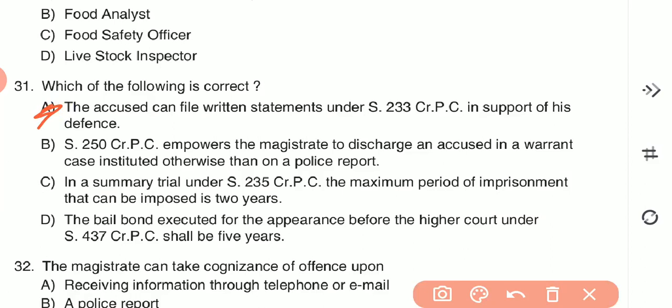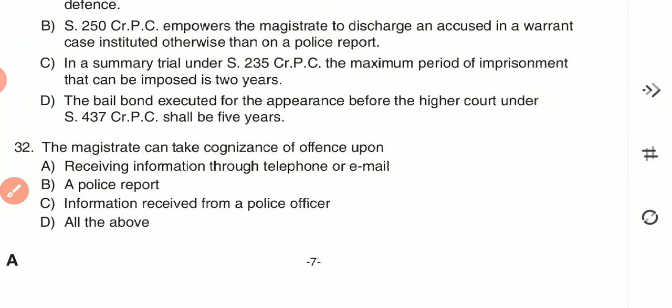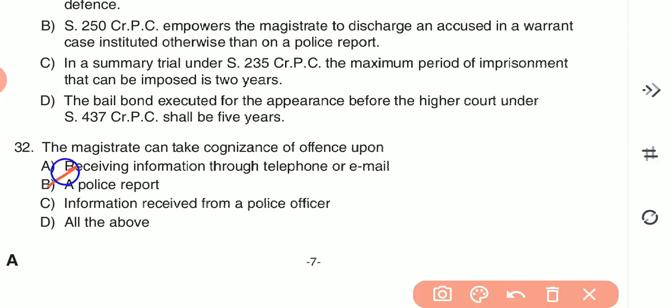Question 32: The magistrate can take cognizance of an offense upon receiving information through — (A) a telephone or email, (B) a police report, (C) information received from a police officer, or (D) all of the above. The correct answer is option B — a police report.